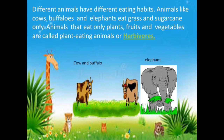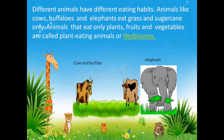So the animals that eat only plants, fruits and vegetables are called plant-eating animals or Herbivores. Animals that like only plants, fruits and vegetables — we call them plant-eating animals or Herbivores.